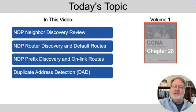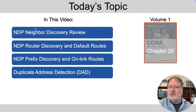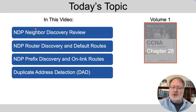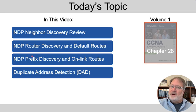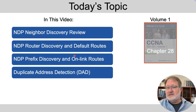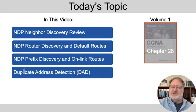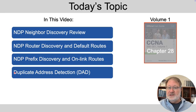We'll start with a quick review of neighbor discovery — there's another whole video on neighbor discovery protocol for learning MAC addresses of neighbors. Then we'll get into router discovery, from which a host builds a default route, and prefix discovery, from which a host will build on-link routes. We'll close with duplicate address detection, a function to make sure your address is not used by another host before you start using it.